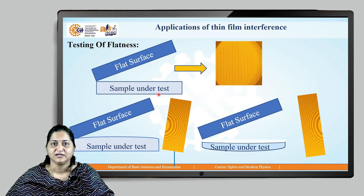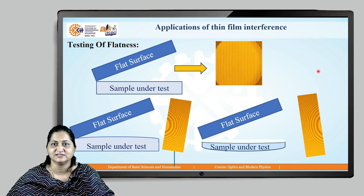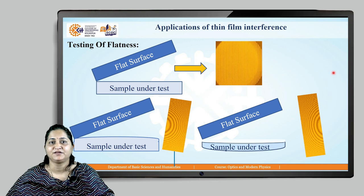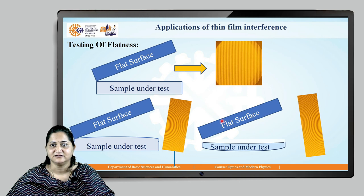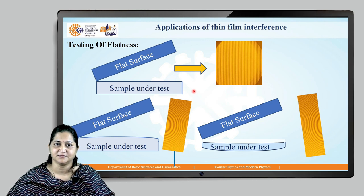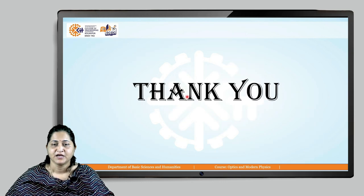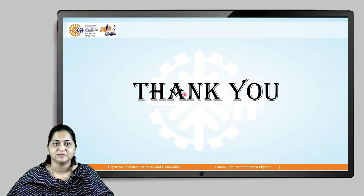For example, if a perfectly flat sample is placed against another flat surface to form a wedge, the interference pattern gives straight, parallel, equidistant fringes. If the sample surface is convex, the fringes curve outward; if concave, they curve inward. This allows us to test the flatness of a surface — one key application of thin film interference. We will discuss diffraction grating in the next video. Thank you.